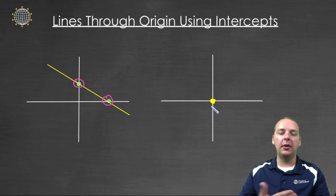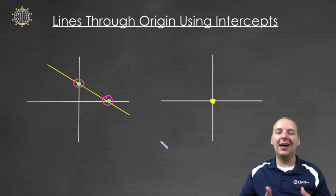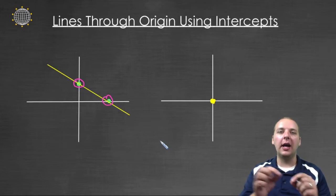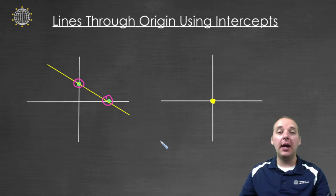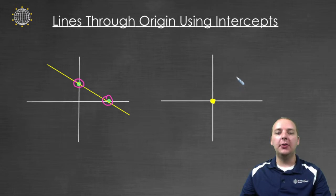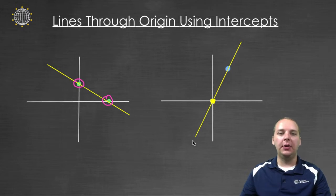If you recall, when we talked about graphing linear equations using intercepts, one of the things I highly recommended doing was picking a test point. And in that scenario, the test point was not necessary. It was just a good idea just to make sure your points are lining up on a straight line. But now it's going to be a little bit more important, because now that test point will be serving as the second point. And so when you pick your test point, then it will become clear what your line looks like. And you can connect the dots as we typically do, and get the graph of your linear equation.